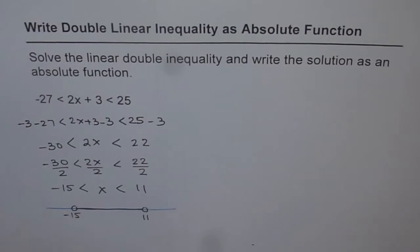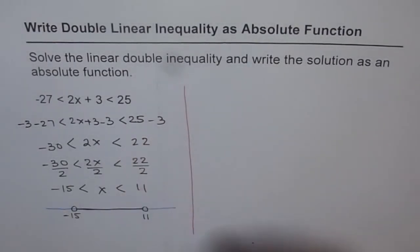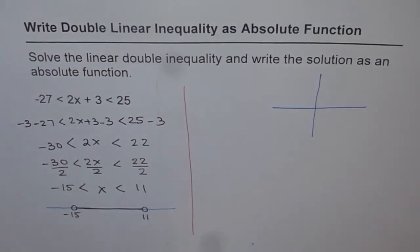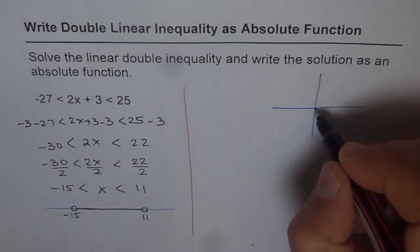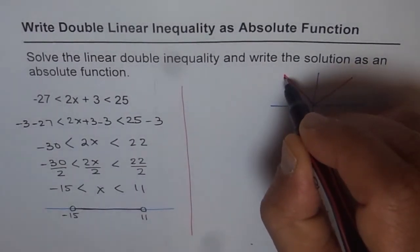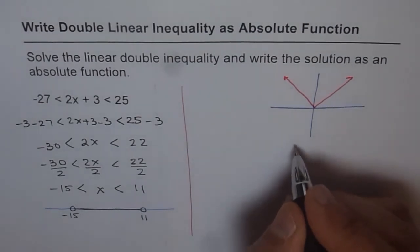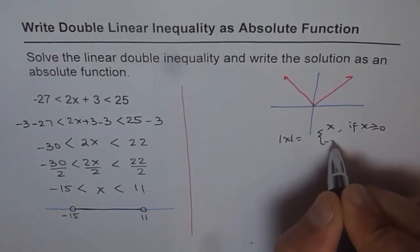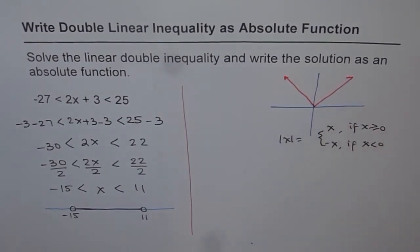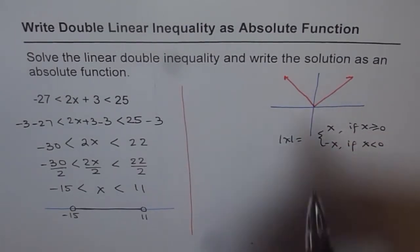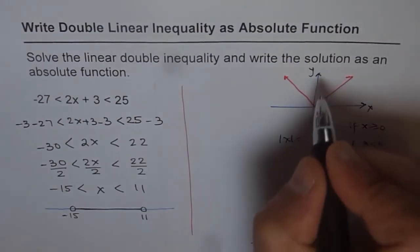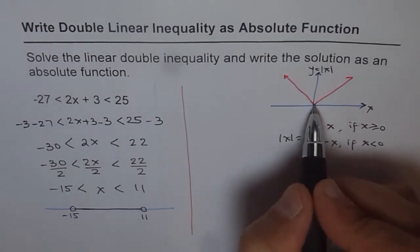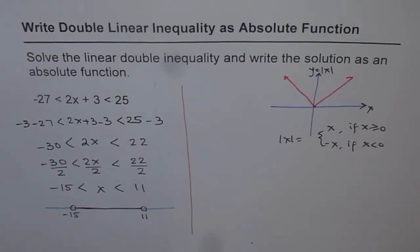Let's understand what an absolute function is. Absolute x returns the positive value for any x: it equals positive x if x is greater than or equal to 0, and negative x if x is less than 0 — but it's always positive. Importantly, for any value of y where y equals absolute x, there are two values of x that correspond to y, except at the vertex.